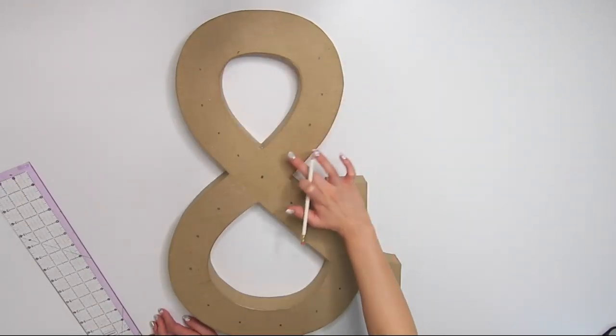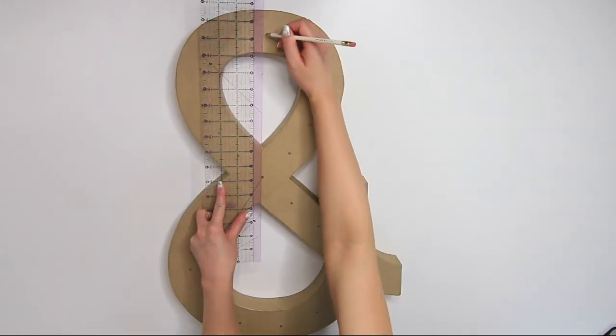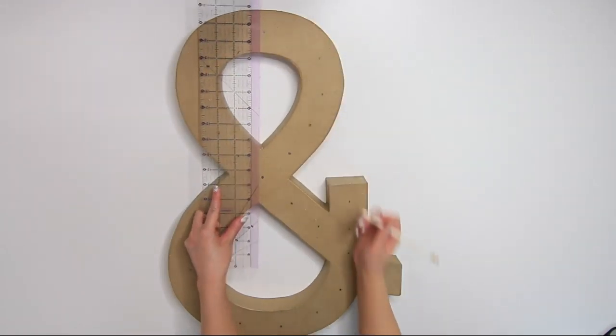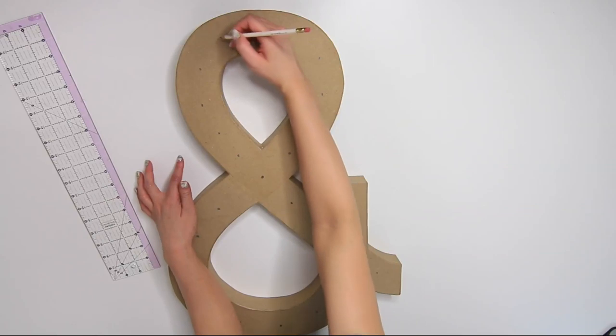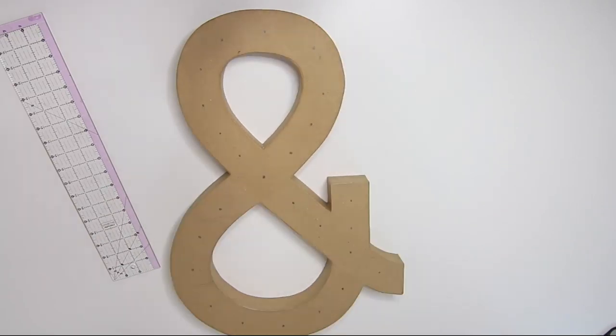Before I added the last few dots, I double-checked my work to make sure I will have a total of 25 dots all around the middle of my paper mache.